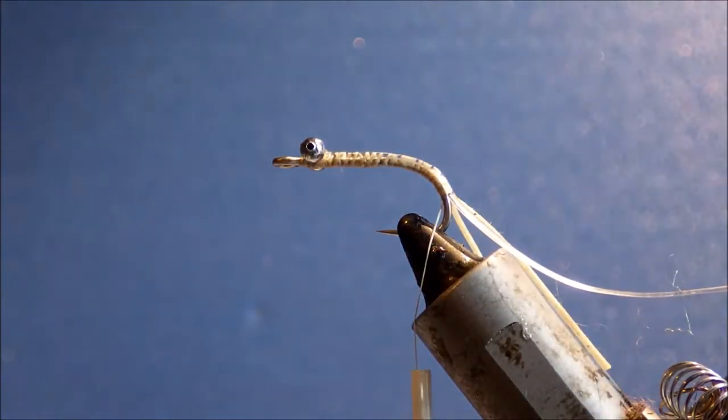So the body of this is going to be EP Shrimp Dub in tan or white depending on the way you're fishing. You could also add a little spot of pink somewhere or orange just as a wee trigger point.